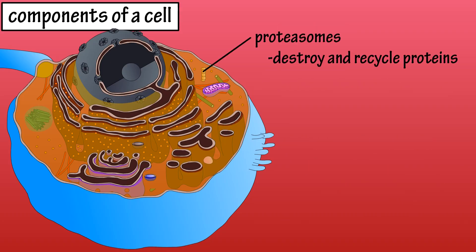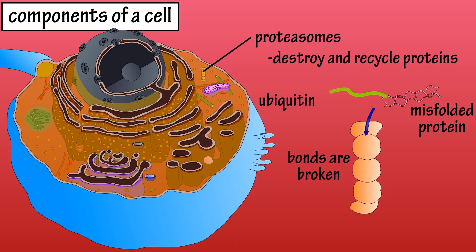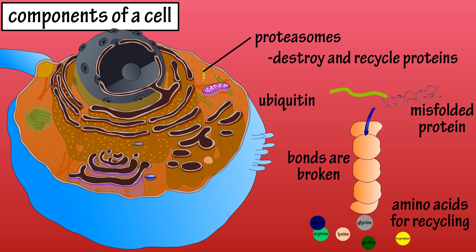Proteosomes are cylindrical protein-destroying organelles found throughout the cytoplasm. They are responsible for breaking down abnormal and misfolded proteins, and normal proteins no longer needed by the cell. A targeted protein is marked by having a separate protein called ubiquitin bound to it. The ubiquitin pulls the protein into the proteosome, where many of its peptide bonds are broken. The resulting smaller peptide chains and amino acids are then released to be recycled by the cell.